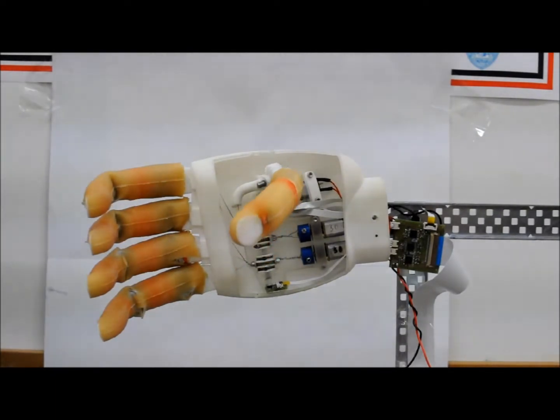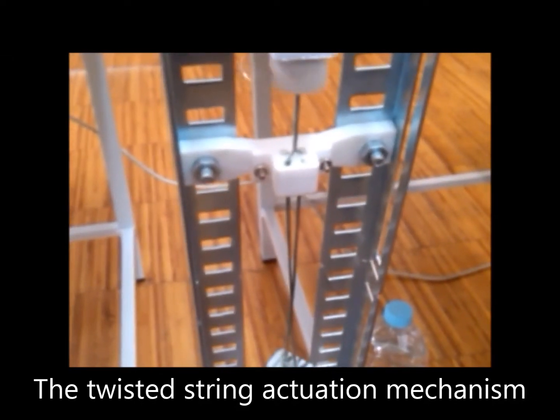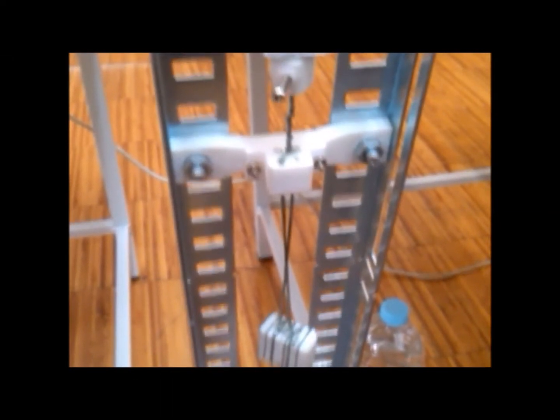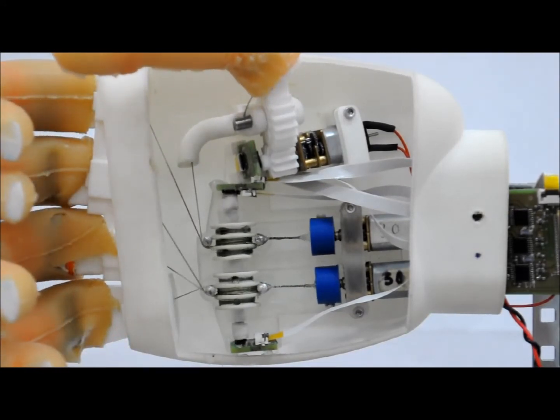A twisted string actuation mechanism is composed of two twisted cords that transform the rotational motion of an electrical motor into high linear forces. It is an extremely lightweight and low-cost system.